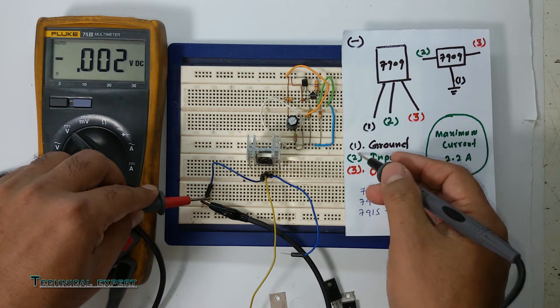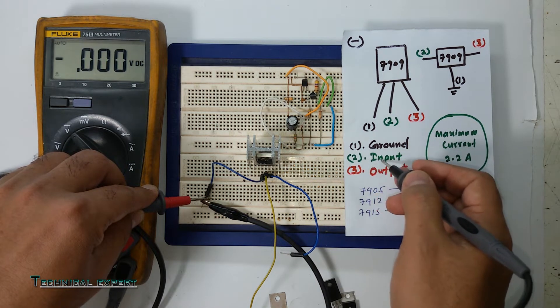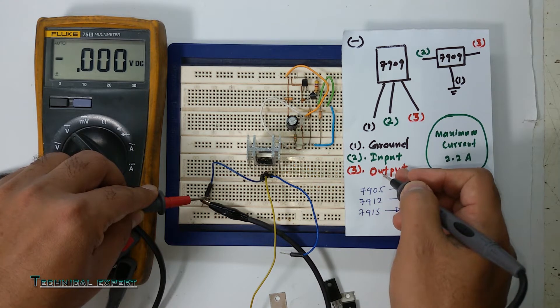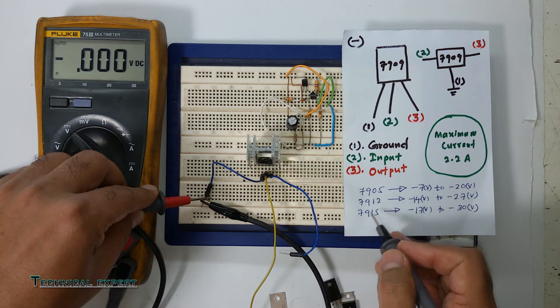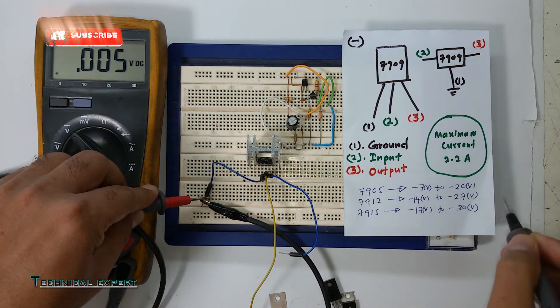Pin one is ground, pin two is input, pin three is output. We have here the 7905, 7912, and 7915 regulators with their input supply ranges and maximum current specifications.